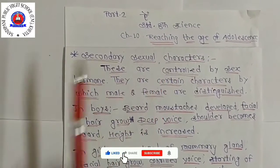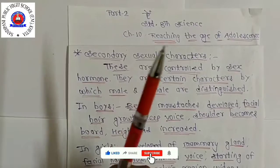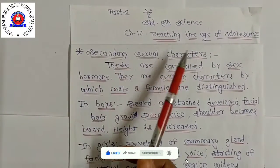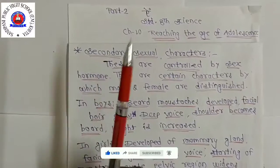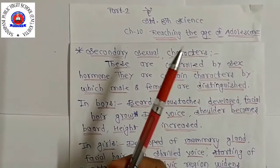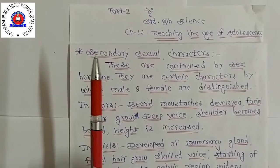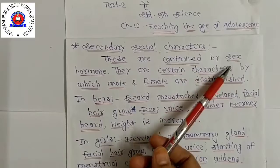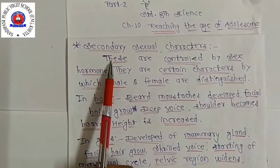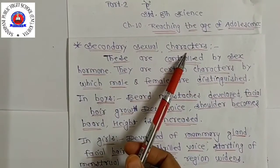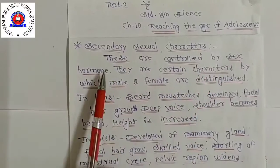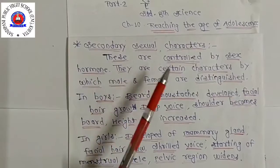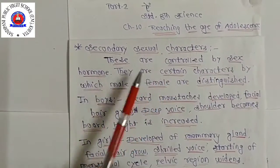Secondary sexual characters are those features that help to distinguish the male from the female. These are the characteristics that differentiate males from females, and they are controlled by sex hormones.